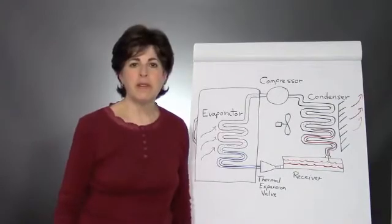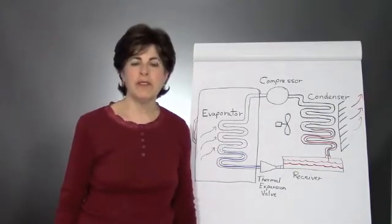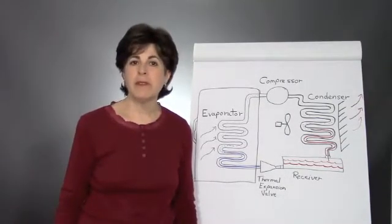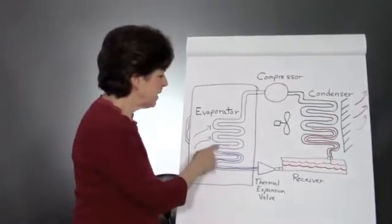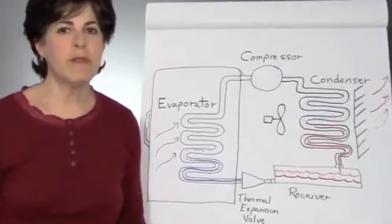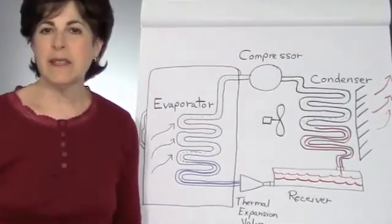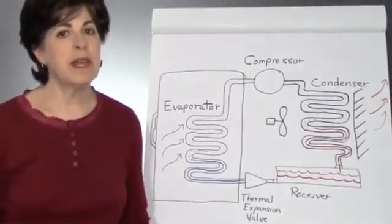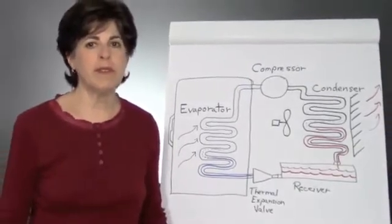Manual defrost and automatic defrost freezers do this in different ways. An automatic defrost freezer has electric heating elements embedded in the evaporator coils. The heaters turn on during the automatic defrost cycle. These heating cycles are on a timer and in advanced models you can set how often the freezer defrosts.